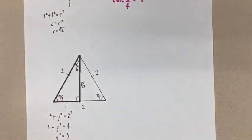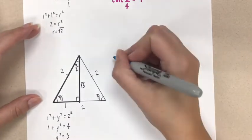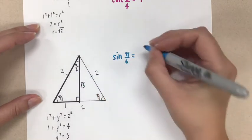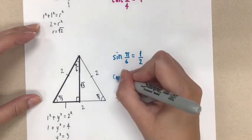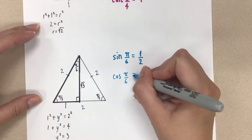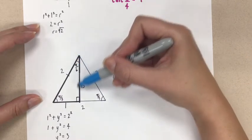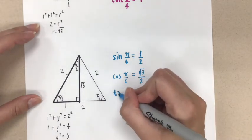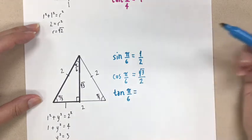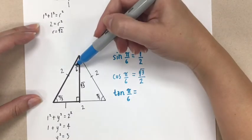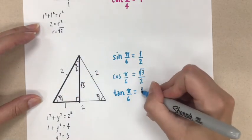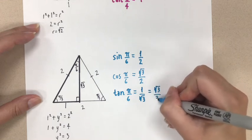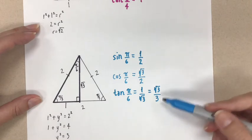Let's start with pi over 6. Sine of pi over 6 — sine is opposite over hypotenuse — gives us 1 over 2. Cosine of pi over 6 — cosine is adjacent over hypotenuse — gives us root 3 over 2. And finally, tangent of pi over 6 — tangent is opposite over adjacent. Looking at this angle, opposite over adjacent gives us 1 over root 3. If we want to rationalize, we multiply by root 3 over root 3, and we get root 3 over 3. And here are our exact values using the angle pi over 6.